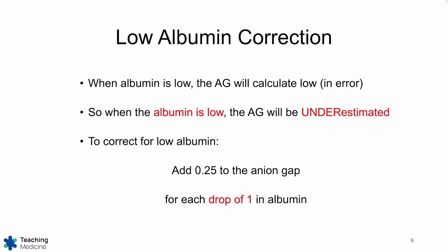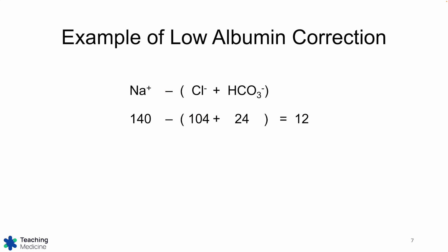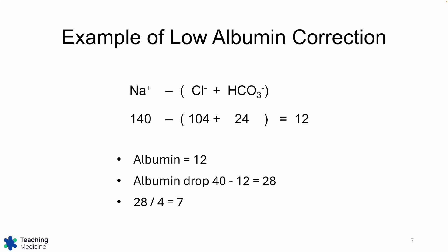To correct for this, we add a quarter point to the anion gap for each drop of 1 in the albumin. For example, let's say we have a normal anion gap with these numbers — the anion gap is 12 — but then you notice the albumin is 12. The normal value is 40, so this represents a drop of 28. Dividing by 4, because it's only a quarter charge per each drop of 1, this means we have an additional 7, and we add that on to the anion gap.